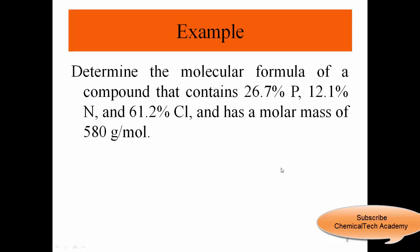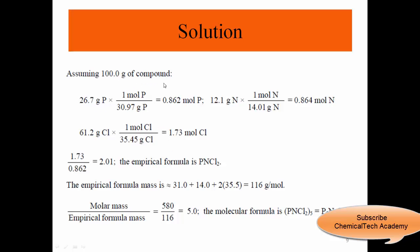Next example: determine the molecular formula of a compound that contains 26.7 percent phosphorus, 12.1 percent nitrogen, and 61.2 percent chlorine, and has a molar mass of 580 grams per mole. We have three elements. We do the same thing, we assume we have 100 grams of compound: 26.7 grams P.